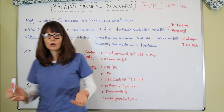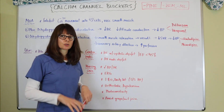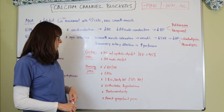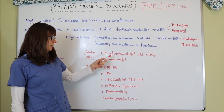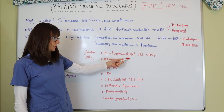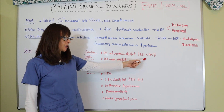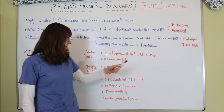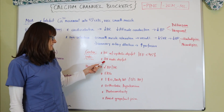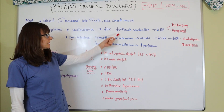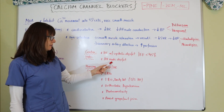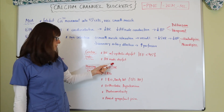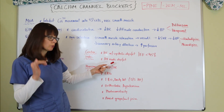Contraindications for calcium channel blockers include patients with heart failure who have systolic dysfunction or an ejection fraction of less than 45%. They should also be avoided in patients with AV node dysfunction, since we don't want to slow conduction further. These patients likely already have a low heart rate and we don't want to reduce it too much.